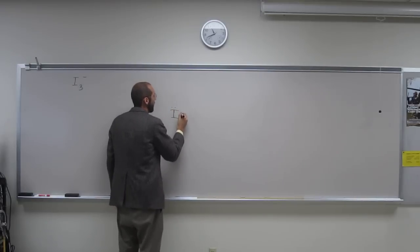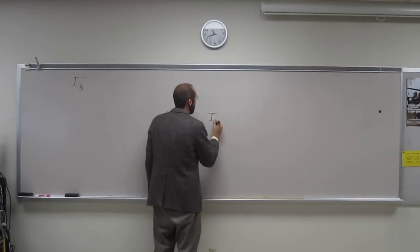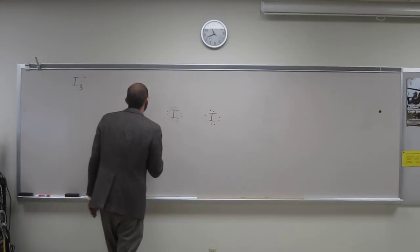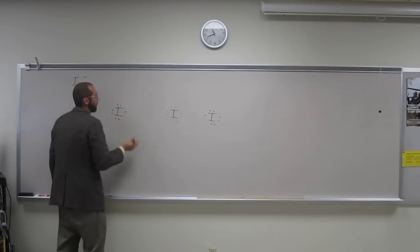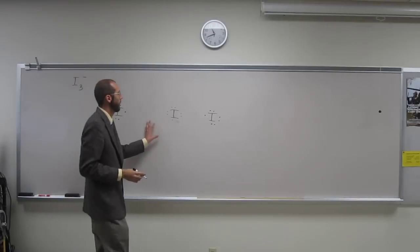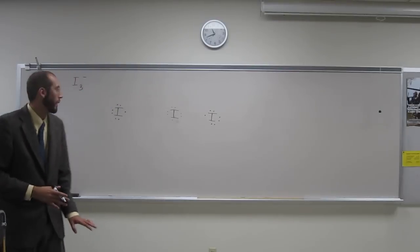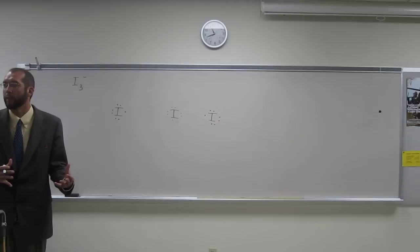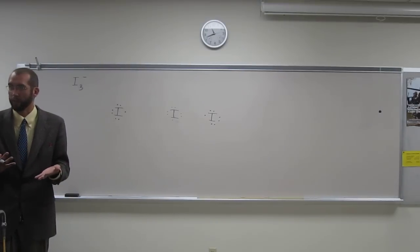So you've got I, so we're just going to put all of the Lewis dot structures. Okay, so when you look at this, well, we still got to add another electron, but already when you look at this, you probably realize if you didn't know one of them has to expand its valence, you look at this and you're like, I can't make single bonds to all of these things.